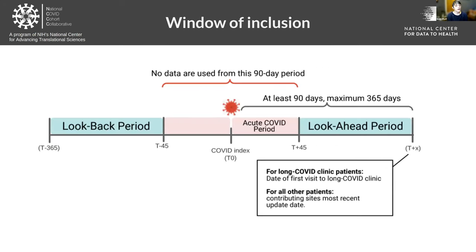When we are looking in N3C for potential long COVID patients, we are looking in a particular window of time. Having such a large EHR repository means we have many patients to choose from, but there are certain subpopulations that are enriched for the type of data that we need.